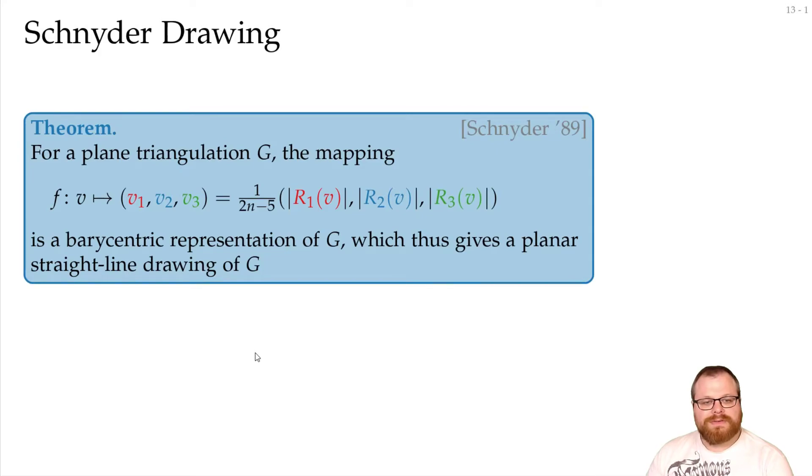We of course have to prove the two properties of a barycentric representation. First, for every vertex, these three numbers have to add up to 1. Now we know that these three numbers add up to 2n-5. So if we add them up, divided by 2n-5, then we get exactly 1.